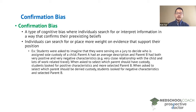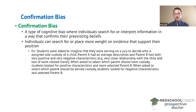Parent B was given a description with both positive and negative characteristics. An example of a positive characteristic was that Parent B had a very close relationship with the child, and an example of a negative characteristic was that Parent B had lots of work-related travel.